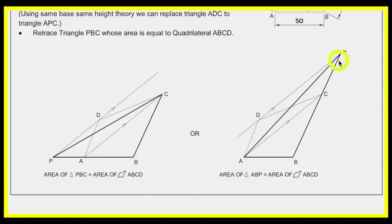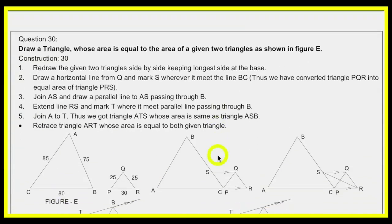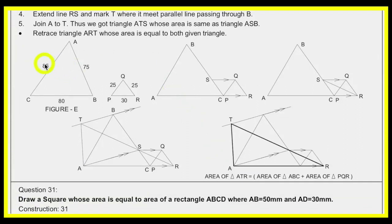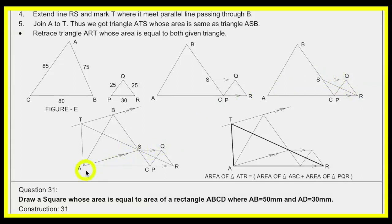For converting two triangles into one: the maximum side (here 85) goes on the base. Draw the other triangle side by side so point C and P coincide. The maximum side goes down, then convert triangle PQR into PRS using the parallel line method. Join AS, draw a parallel line through point B to T, extend RS to wherever it cuts at T. The main triangle ATR is the combination of both triangles.